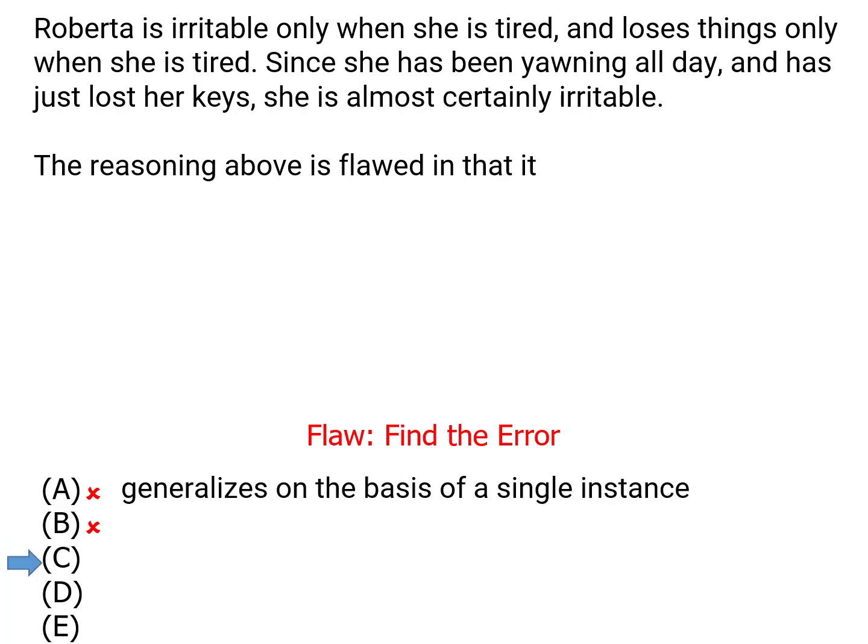Answer choice C says that the argument generalizes on the basis of a single instance. Now there is a generalization in this argument, but the argument isn't trying to prove the generalizations — the generalizations are things that the argument is using to prove something with. So answer choice C is not our answer.